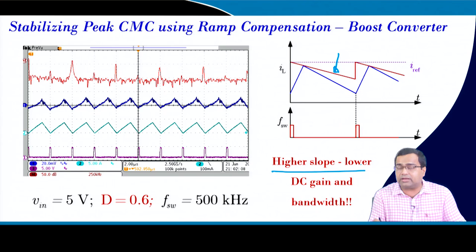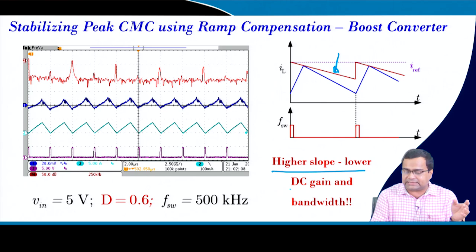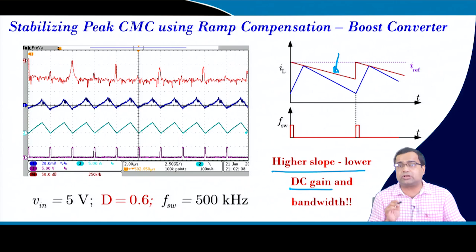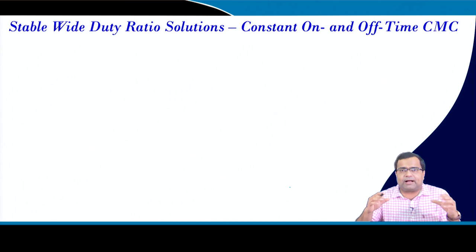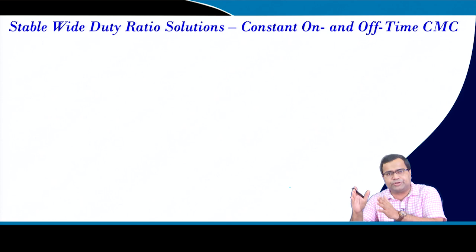The compensating ramp also reduces the DC gain in current mode control, which decreases the closed-loop bandwidth and can affect steady-state error. For wide duty ratio operation, increasing ramp slope means the major advantage of current mode control may be lost.